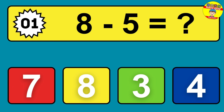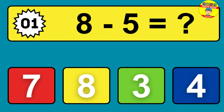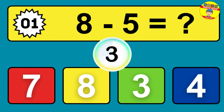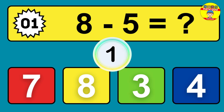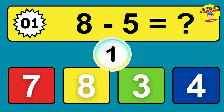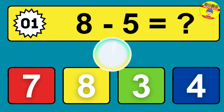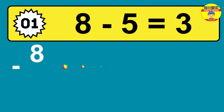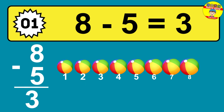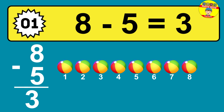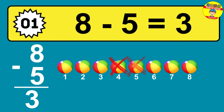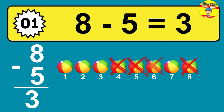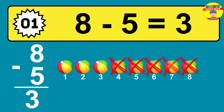Question 1: 8 minus 5 equals what? So the answer is 8 minus 5 is 3. Let's count it: 1, 2, 3.